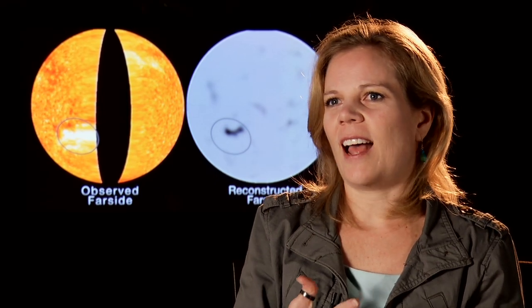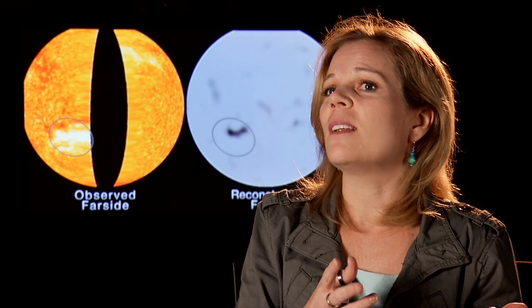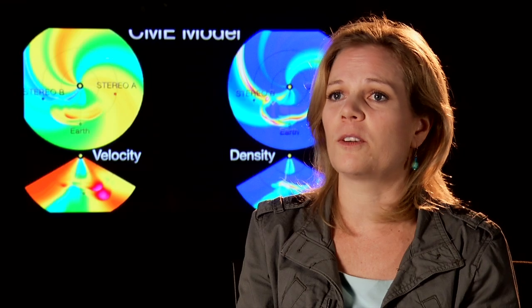The coronal mass ejection is much slower, and that takes about one to four days to reach us. Coronal mass ejections have a range of speeds, but they can reach the Earth between on the order of one day to three days, so that's how much time we have to prepare for when they impact the Earth.